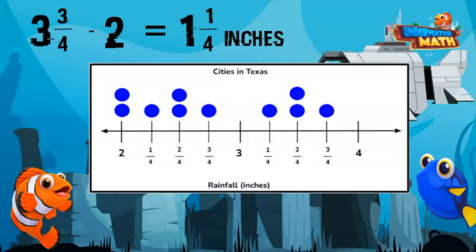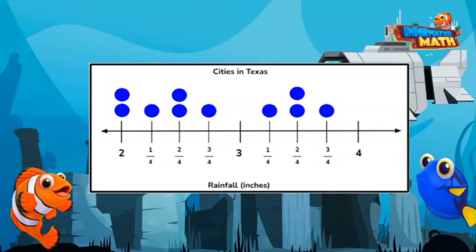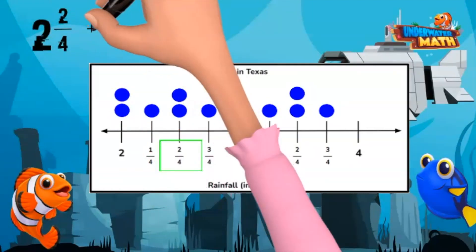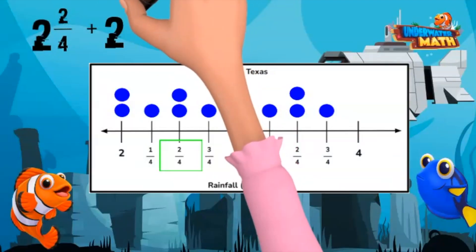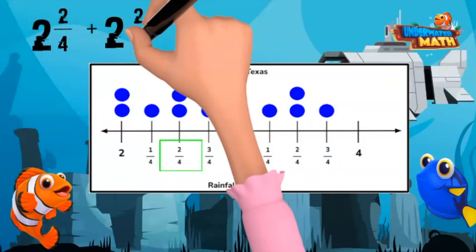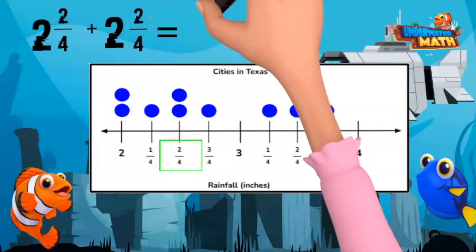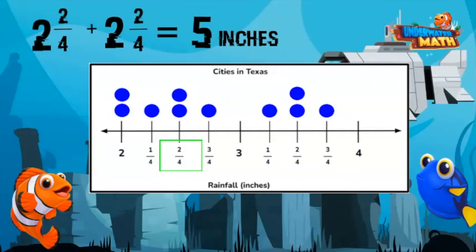What's the total amount of rainfall of the cities that received 2 and 2/4 inches of rain last month? Two cities each received 2 and 2/4, or 2 and a half, inches of rain last month. To find the total, we need to add 2 and 2/4 plus 2 and 2/4. 2 plus 2 is 4. 2/4 plus 2/4 equals 4/4, which equals 1. If we add the 1 to the 4, we get 5 inches. The two cities that received 2 and 2/4 inches received a total of 5 inches last month.